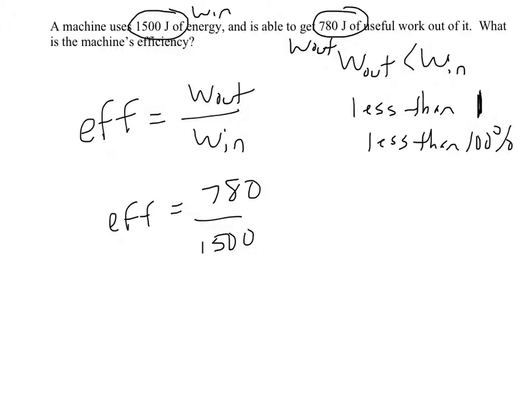Sometimes that's sufficient. The decimal answer is 0.52. The efficiency is 0.52. We usually like to think of it as a percent, so we'll just multiply it by 100, and we'll say that this is 52% efficient.